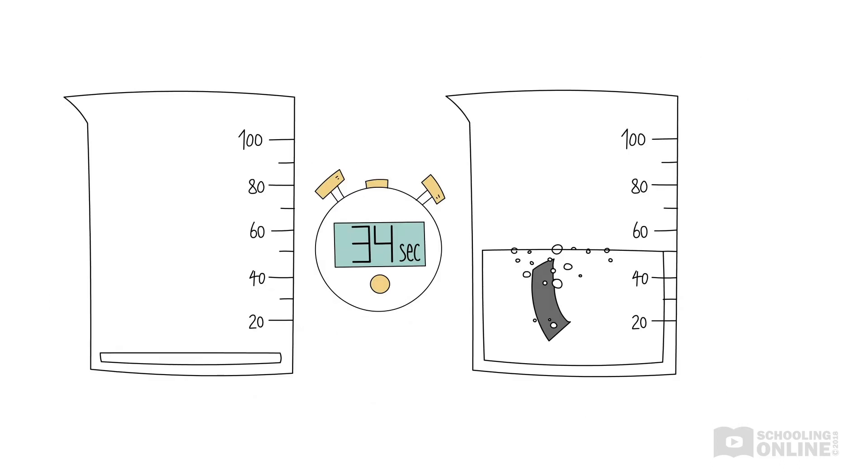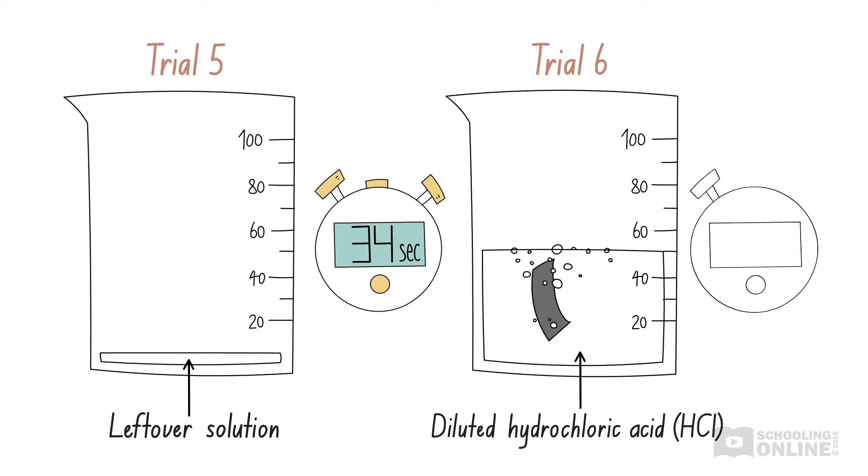Perhaps we forgot to clean the beaker after the fifth trial, so that some of the old reaction solution was still in the beaker when we did the sixth trial. If so, the hydrochloric acid solution would have been diluted to a much lower concentration, and the reaction would have occurred more slowly. In any case, we should ignore this outlier when performing calculations.